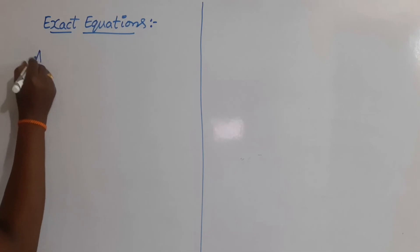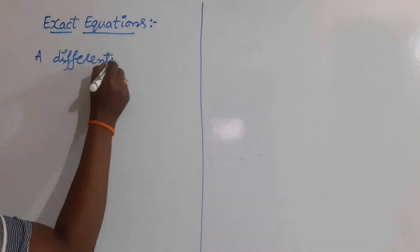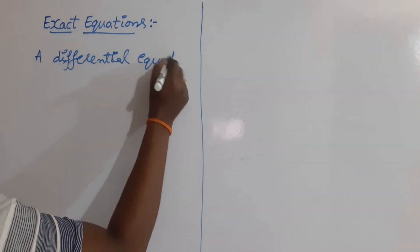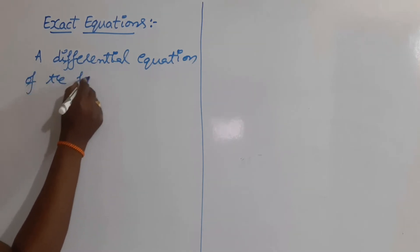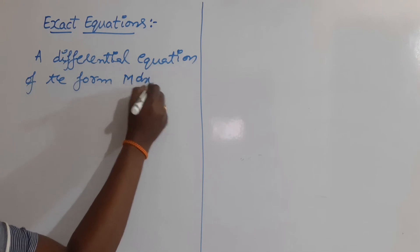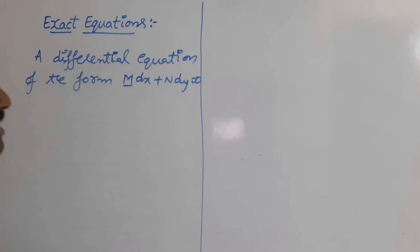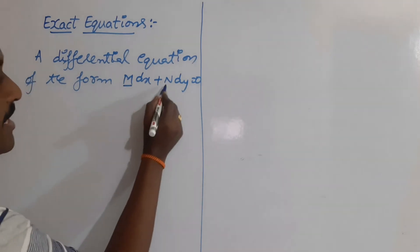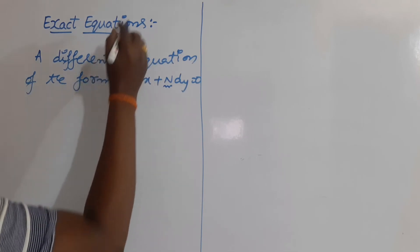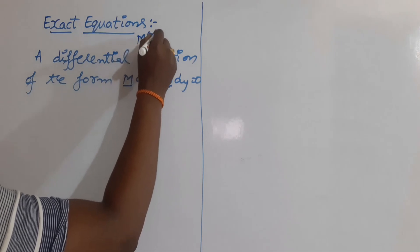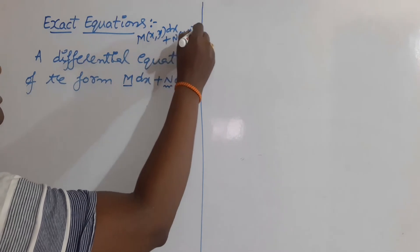A differential equation of the form M dx plus N dy is equal to 0, where M is a function in terms of x and y, and N is also a function in terms of x and y. Some textbooks also write this equation as M(x,y) dx plus N(x,y) dy is equal to 0.